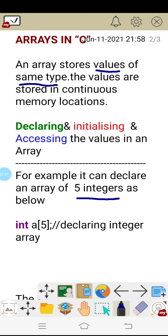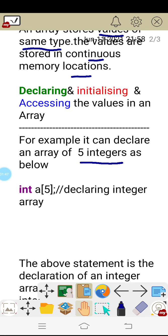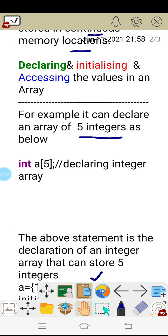Characters like a, b, c, d or whatever is available on the keyboard. The values are stored in continuous memory locations. Next we'll go for the explanation of how to declare, how to initialize, and how to access the values in an array.